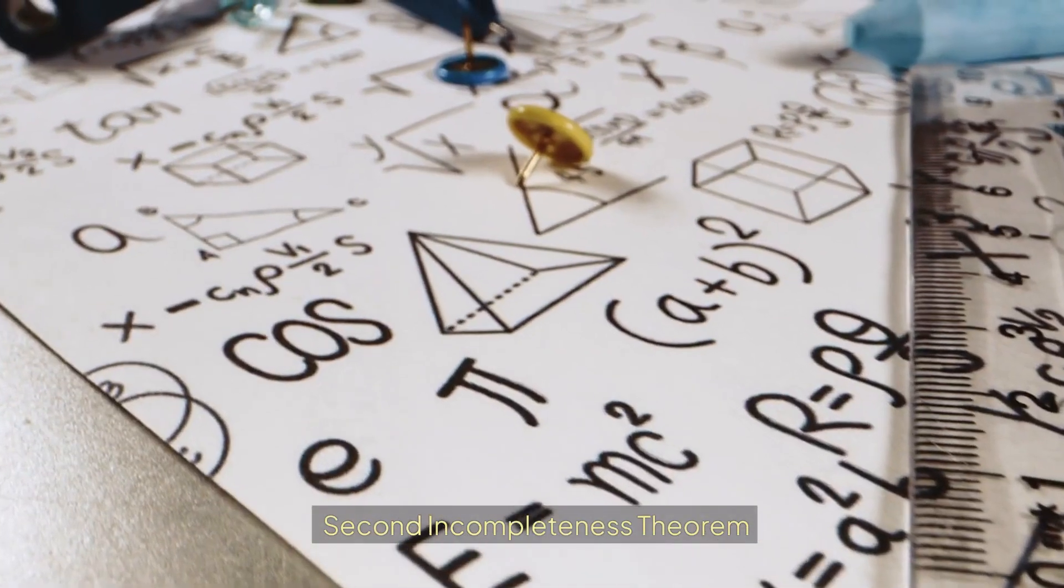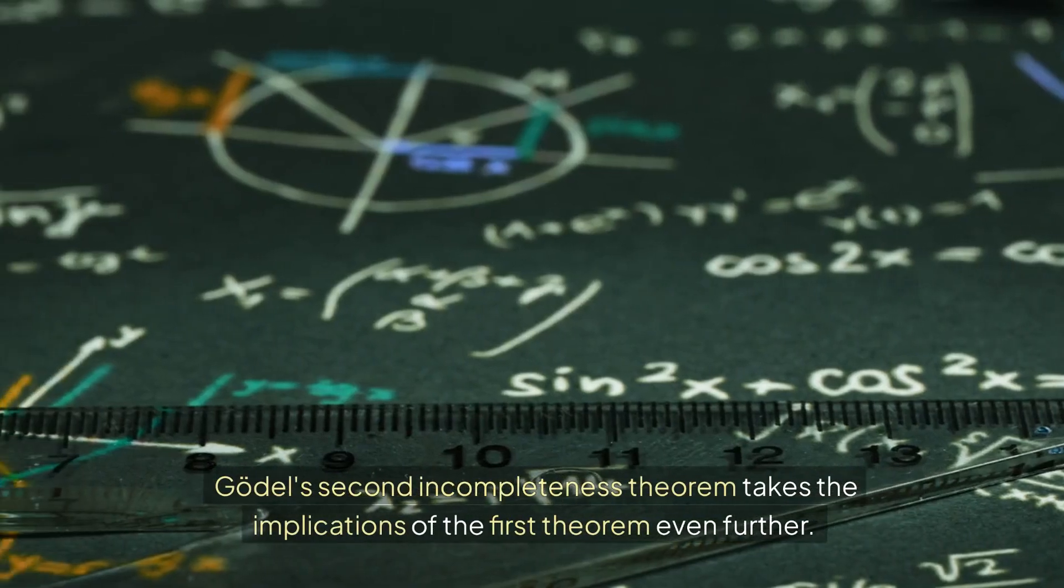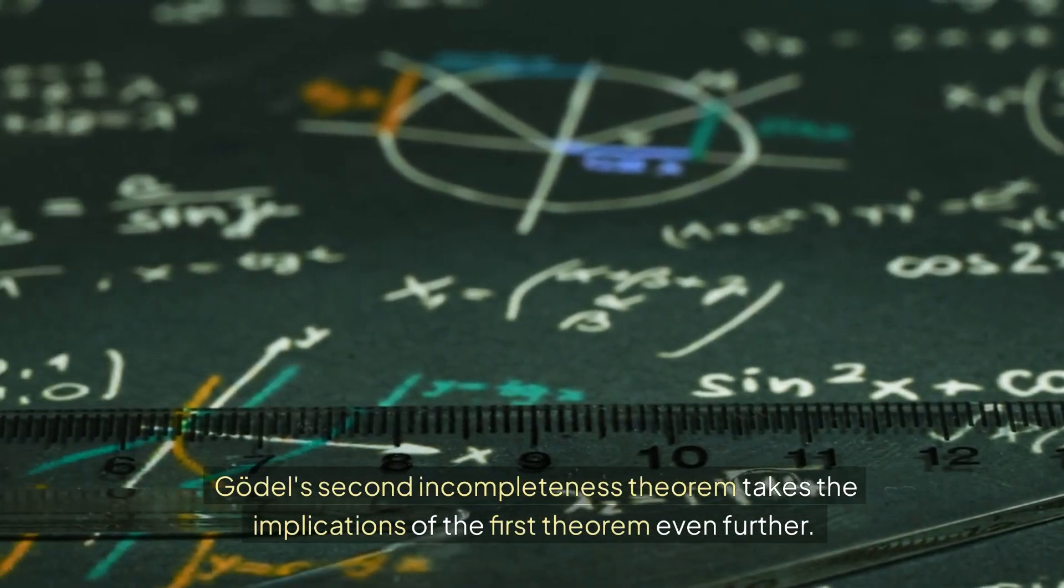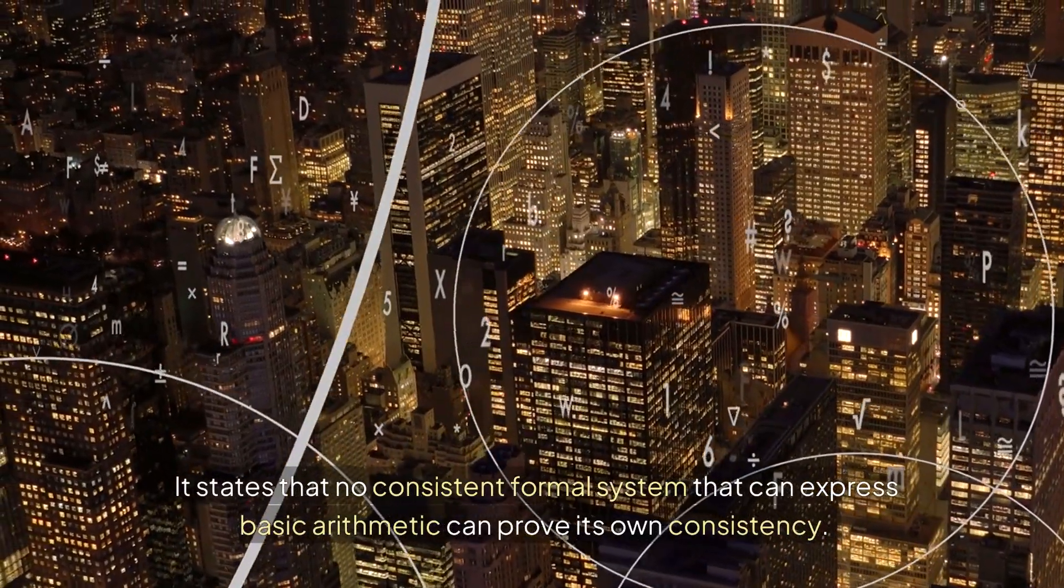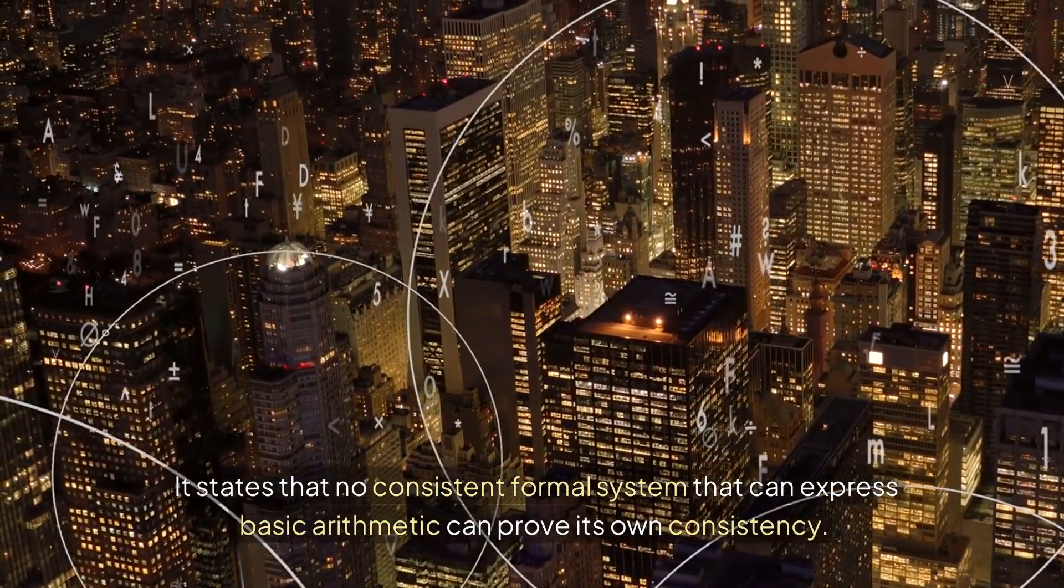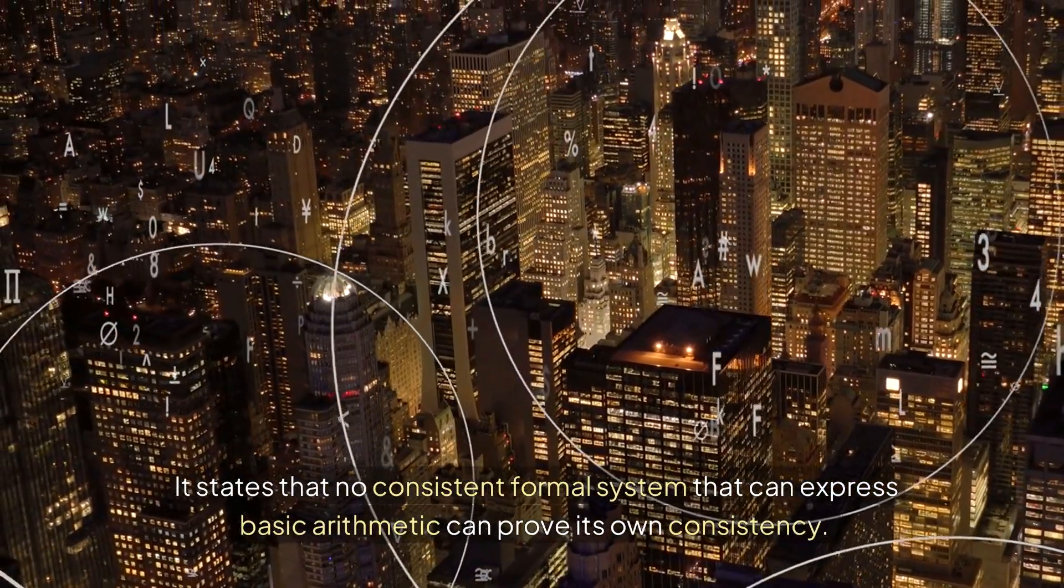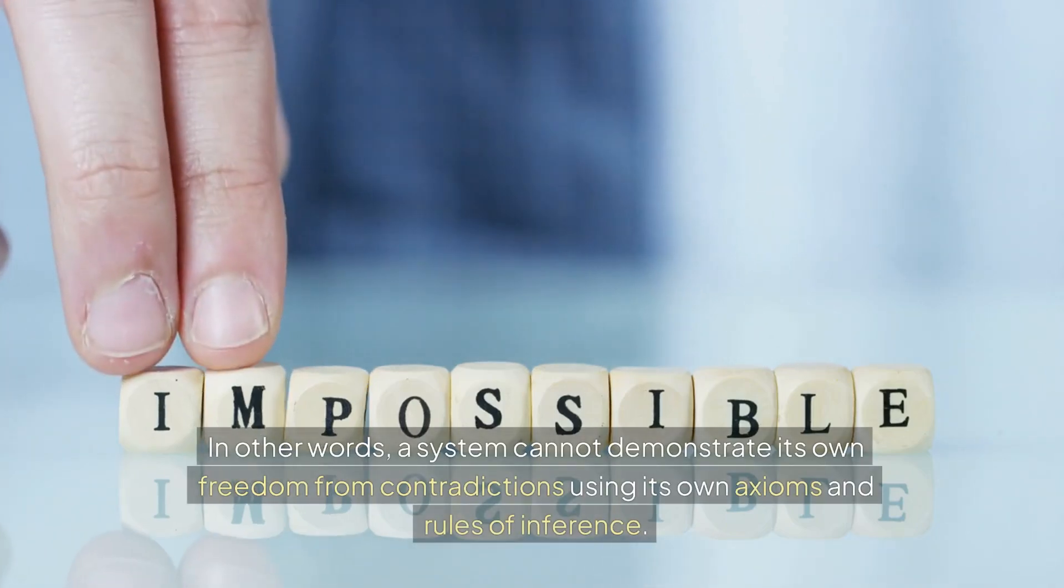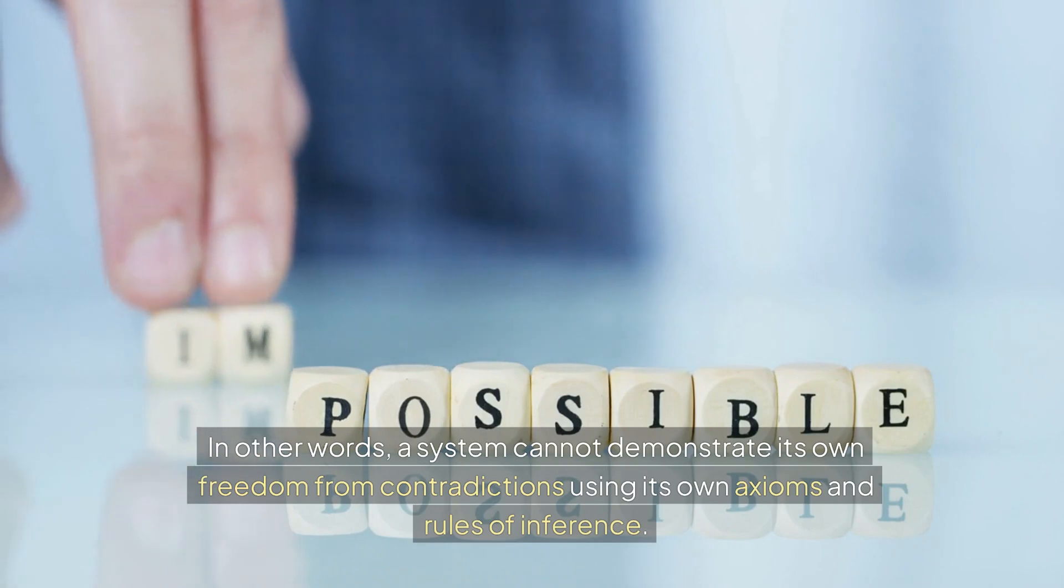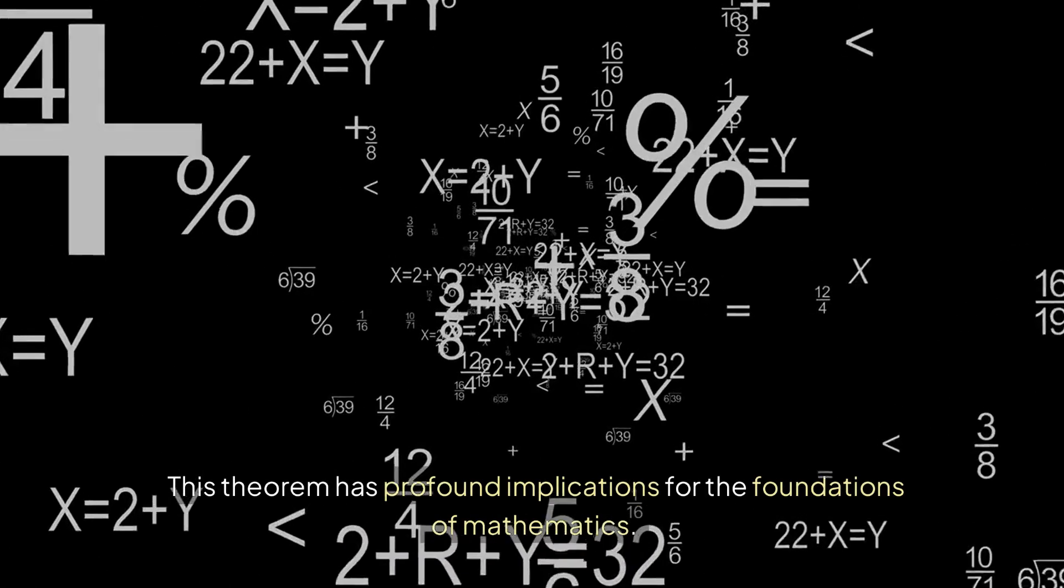Second incompleteness theorem: Gödel's second incompleteness theorem takes the implications of the first theorem even further. It states that no consistent formal system that can express basic arithmetic can prove its own consistency. In other words, a system cannot demonstrate its own freedom from contradictions using its own axioms and rules of inference.